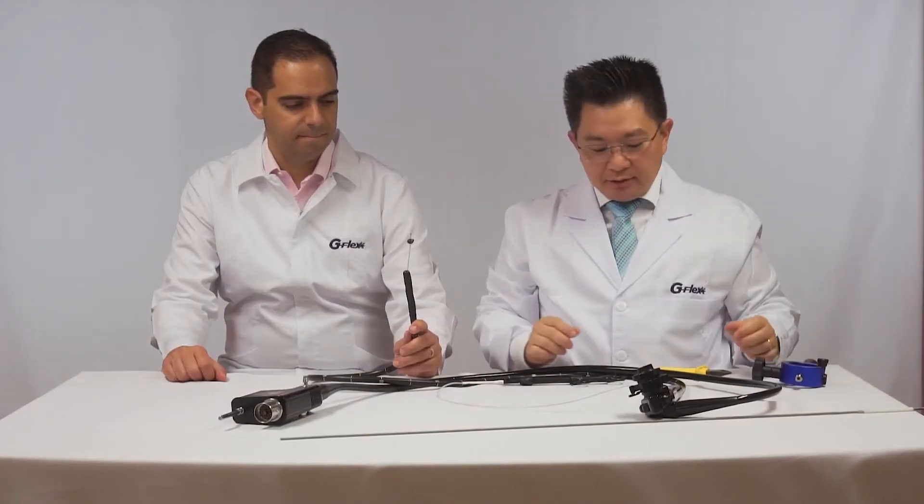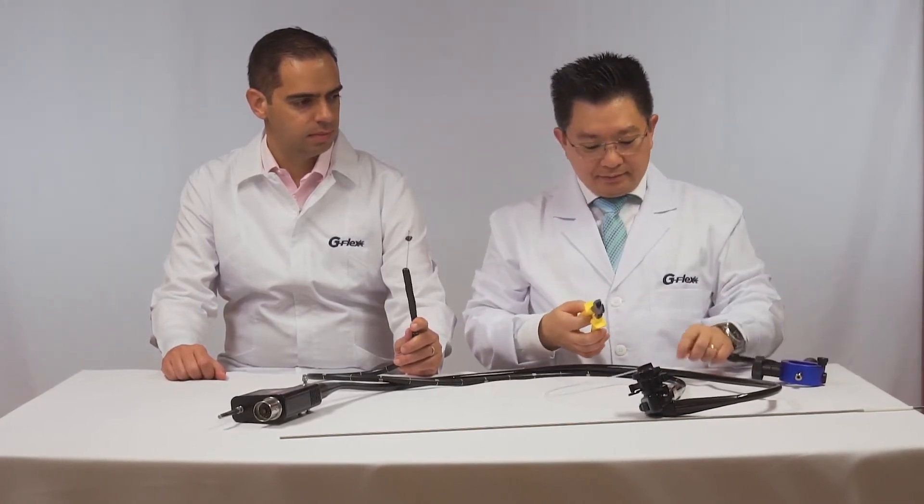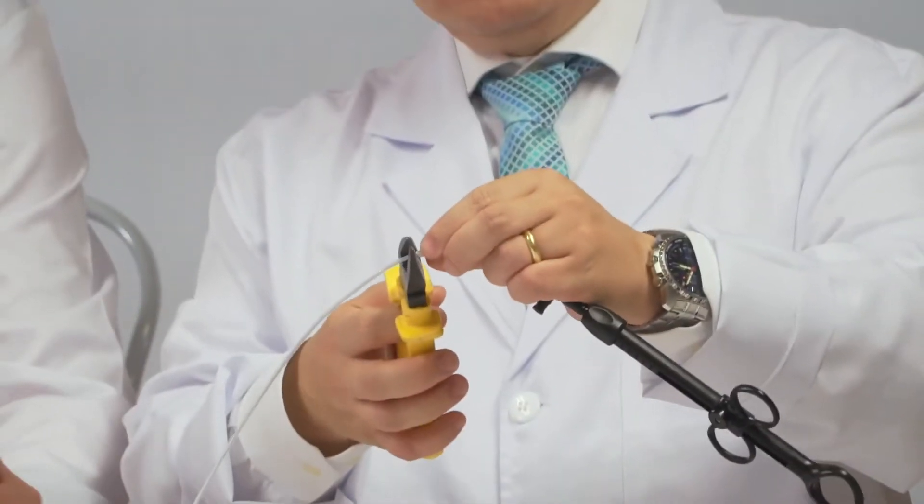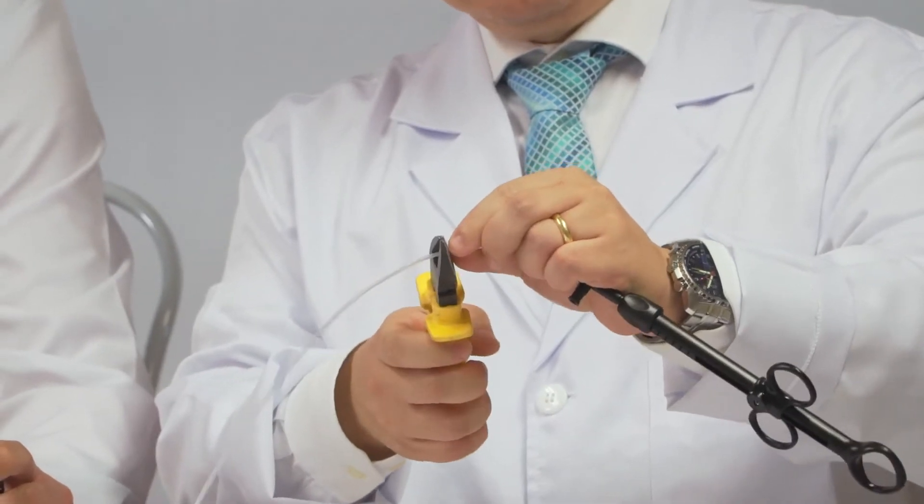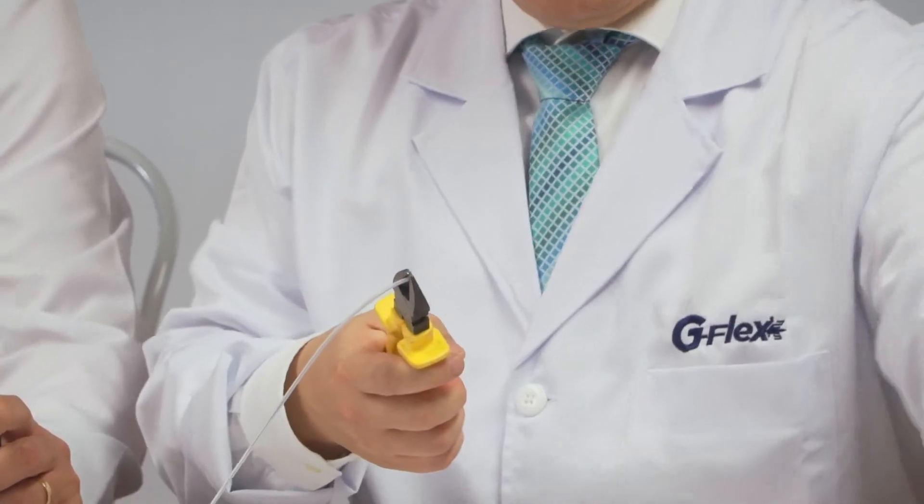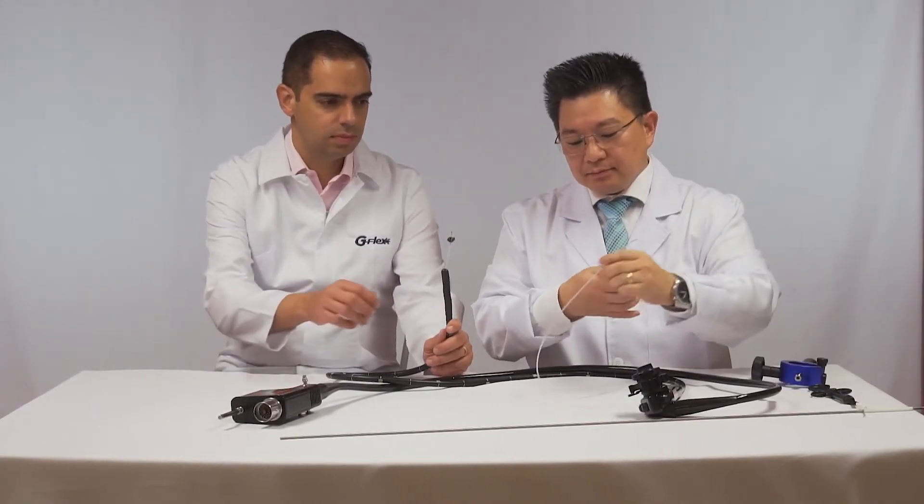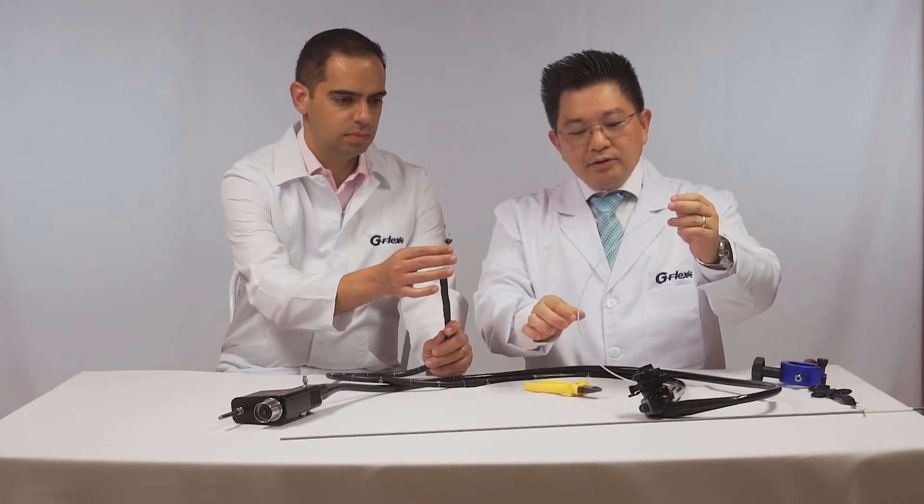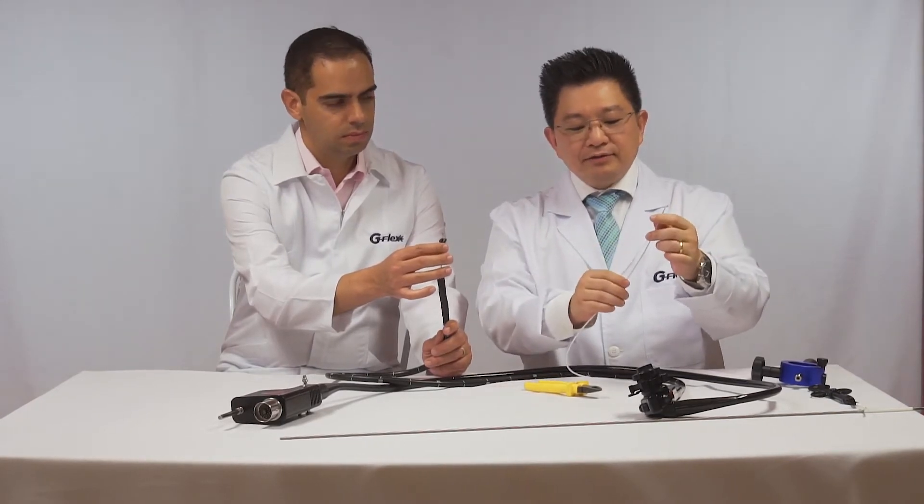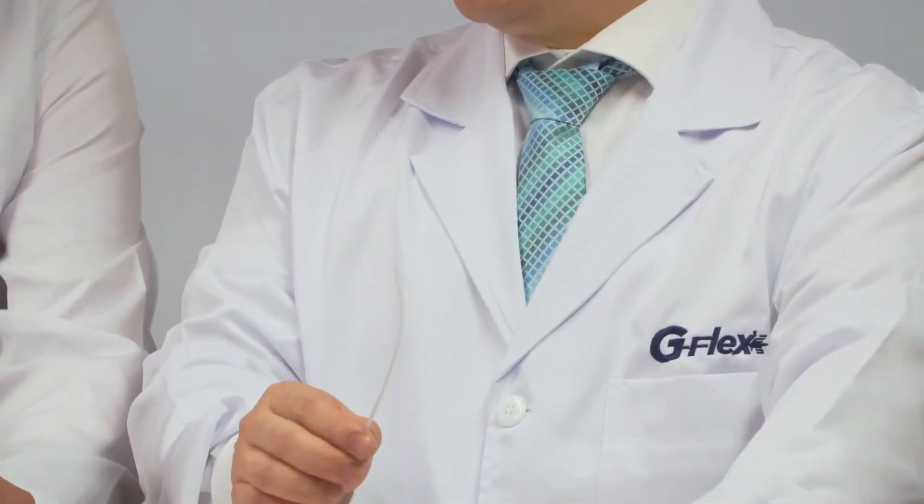That's why we need to cut the device like this. Cut off the handle and now you need to keep the plastic sheath to prevent damage to the working channel of the duodenoscope.